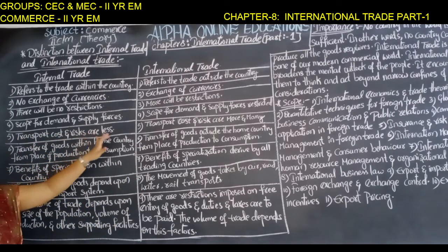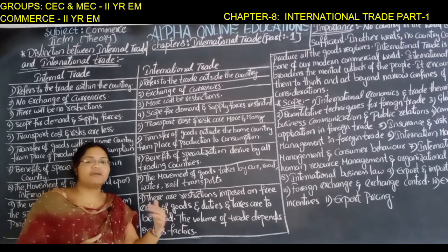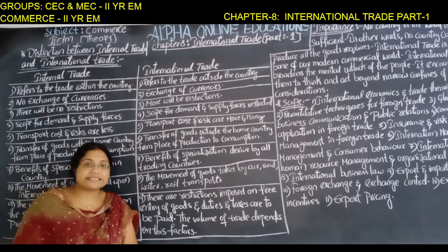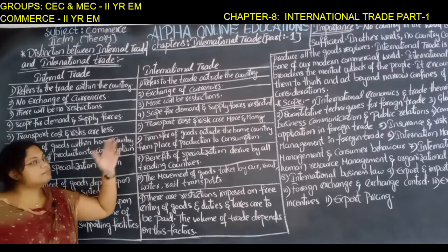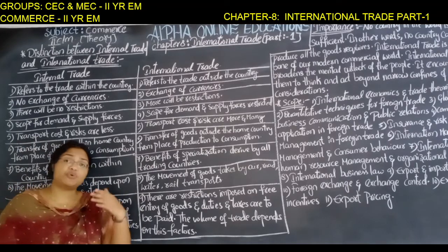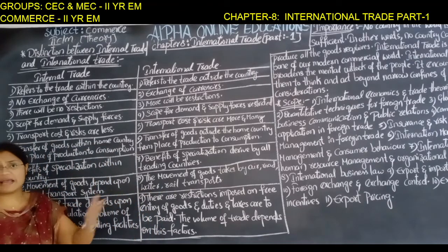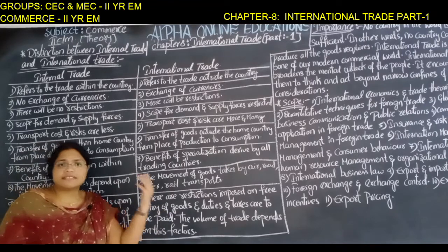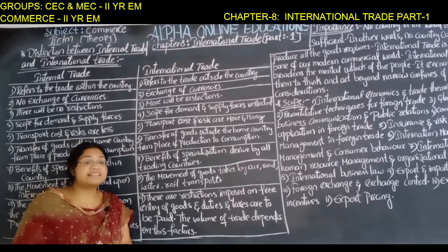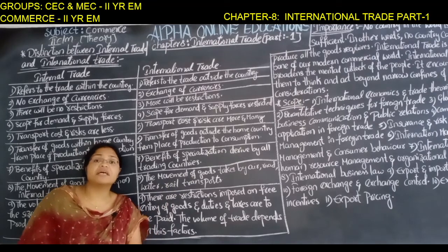In internal trade, transport cost and risk are less, as transportation takes place within the country by roadways or railways. In international trade, the transport cost is very high and the risk factor is also very high, since railways, waterways, and seaways are used. That's why in international trade, insurance is generally taken.